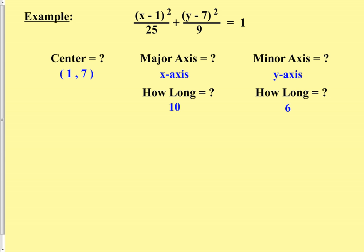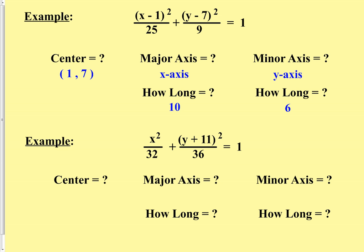Using that information we'd be able to graph it. Let's look at another example: x squared over 32 plus y plus 11, quantity squared, over 36, equals 1. We're going to address the same questions as above — we need the center, which axis is which, and the lengths of both axes. For the center: in the first term there is no h value being added or subtracted to x, so our h is 0. On the k value, the formula says y minus k but it says plus, which means the number that follows must have been negative and changed the sign. So that is a negative 11. Our center is at 0 comma negative 11.